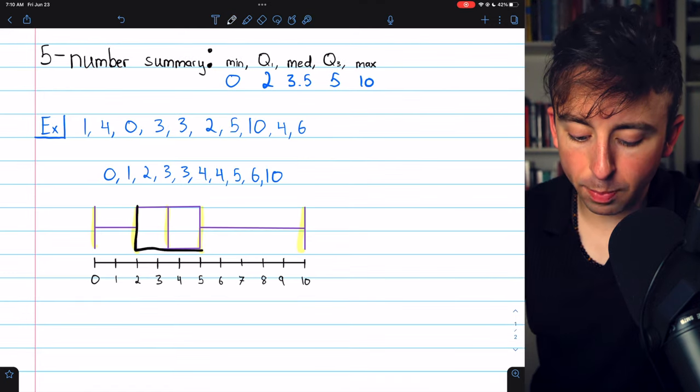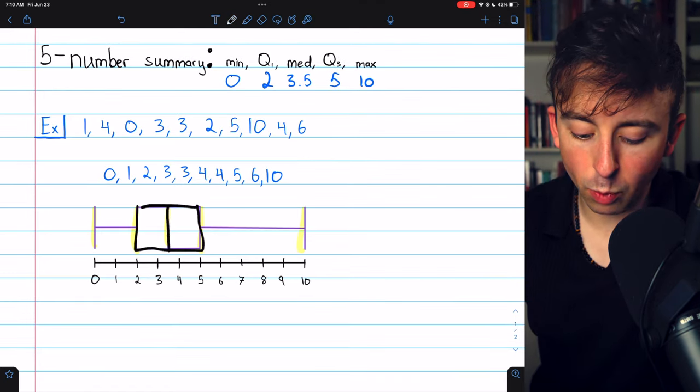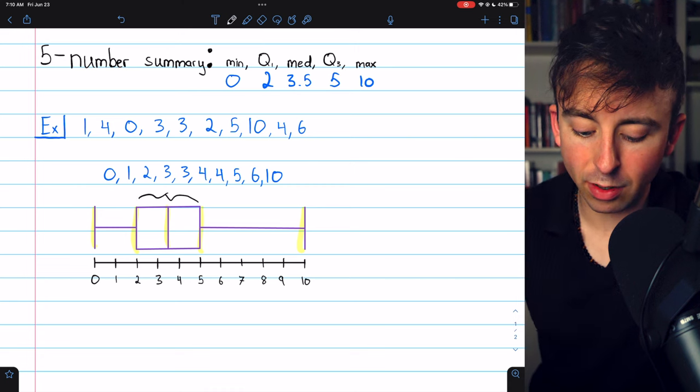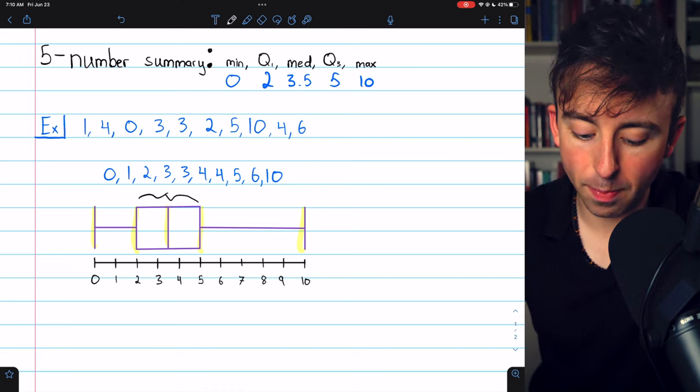We draw a box between Q1 and Q3 with the median in the middle. The distance between these values, or the width of the box, is the interquartile range.